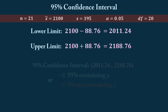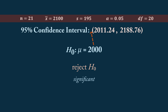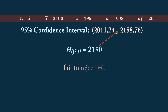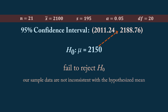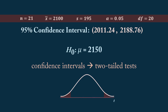We can also use confidence intervals to corroborate our hypothesis testing decision. Observe that the hypothesized mean of 2,000 calories falls outside our confidence interval. This aligns with our earlier decision to reject the null hypothesis, confirming that our result is statistically significant at the 95% confidence level. For contrast, if our hypothesized mean were 2,150 calories — which falls within our confidence interval — we would fail to reject the null hypothesis, concluding that our sample data are not inconsistent with that hypothesized mean. It's crucial to remember that confidence intervals should only be used to make decisions for two-tailed hypothesis tests, not one-tailed tests, since the confidence interval is symmetrical around the sample mean.